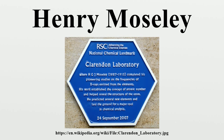Moseley's law justified many concepts in chemistry by sorting the chemical elements of the periodic table in a logical order based on their physics. Moseley's law advanced atomic physics by providing the first experimental evidence in favor of Niels Bohr's theory, aside from the hydrogen atom spectrum which the Bohr theory was designed to reproduce. That theory refined Ernest Rutherford's and Antonius van den Broek's model, which proposed that the atom contains in its nucleus a number of positive nuclear charges equal to its number in the periodic table. This remains the accepted model today.